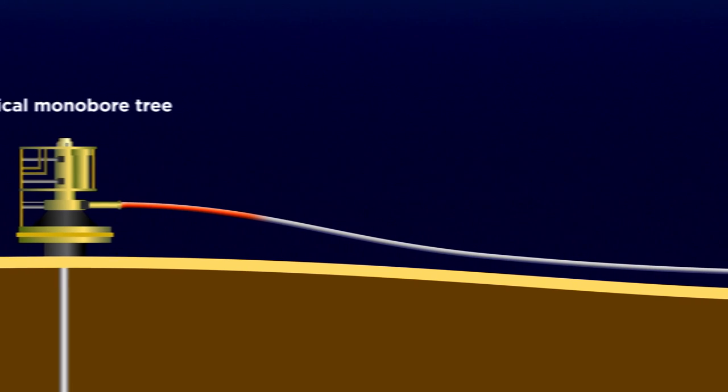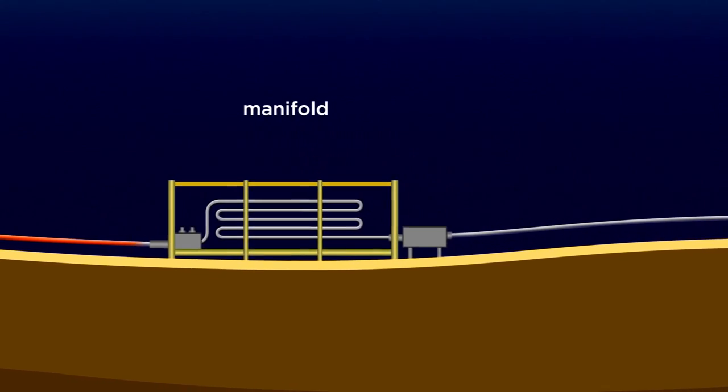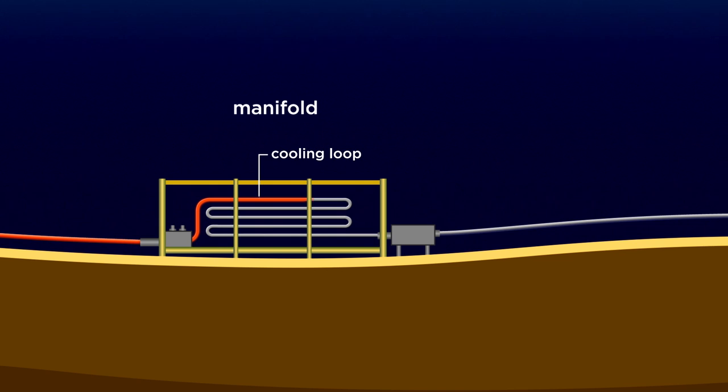From the subsea tree, fluids run to the subsea manifold which includes a subsea cooling loop that controls temperature of production fluids entering the pipeline. Also part of the manifold, the subsea high-integrity pressure protection system manages pressure between the reservoir and the receiving facilities.